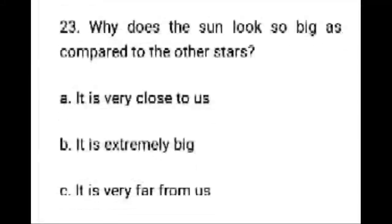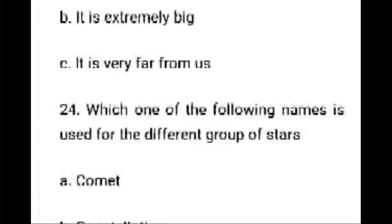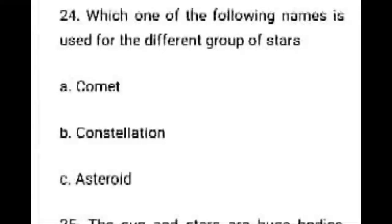Why does the Sun look so big compared to other stars? The right answer is it is very close to us. Which of the following names is used for different groups of stars? Options: Common, Constellation, Asteroids. The right answer is constellation — option B is correct.